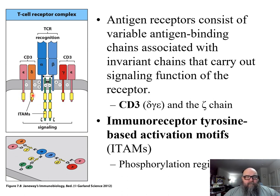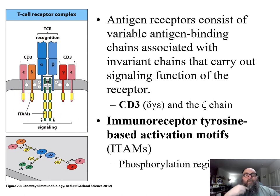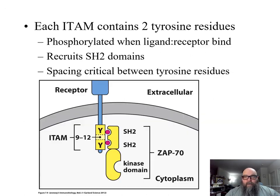The ITAMs are supplied by CD3. As you're seeing here, these are the delta, gamma, epsilon, and gamma chains. These associate with the T cell receptor, so when the T cell receptor gets bound, these are what are going to become phosphorylated and start the dominoes falling.